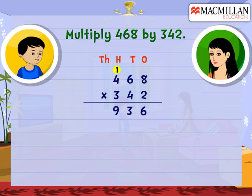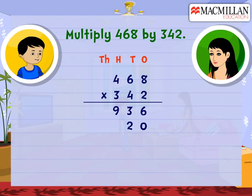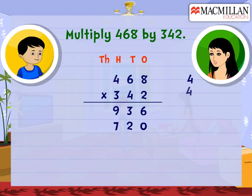And for the next, we first put 0 at 1's place. Then we multiply first 8 by 4, then 6 by 4, then 4 by 4.